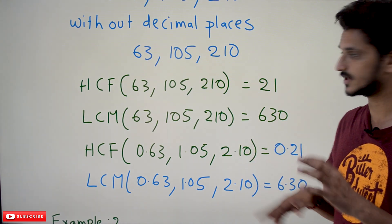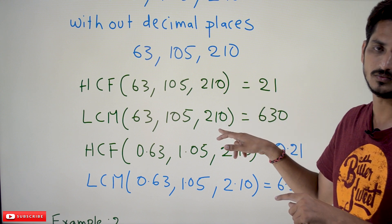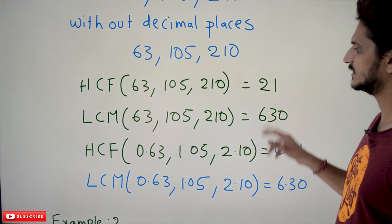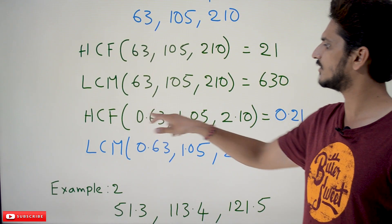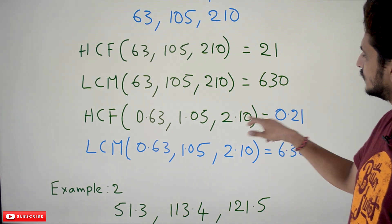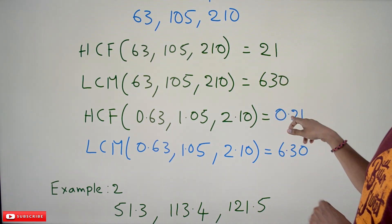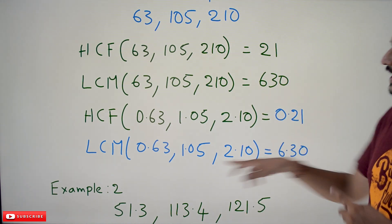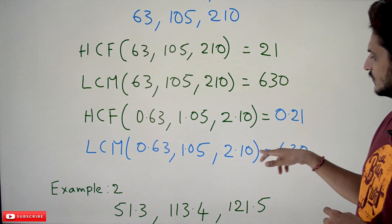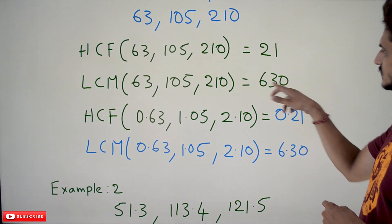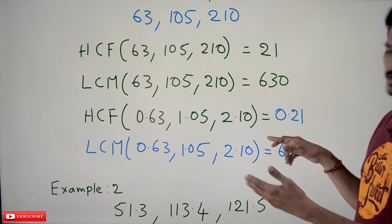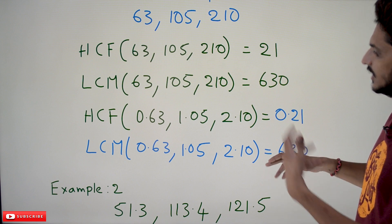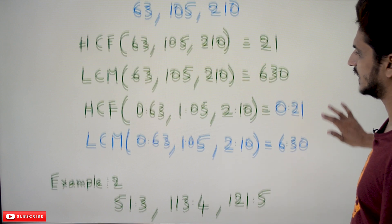We are not going to focus on how the HCF and LCM values are calculated — we already discussed that in previous classes. So we have 21 and 630. The HCF of 0.63, 1.05, 2.10 is 21 — but since we have two decimal places, we place the decimal to get 0.21. The LCM of 0.63, 1.05, 2.10 is 630, which with two decimal places becomes 6.30. This is how we identify the HCF and LCM of decimal fractions.